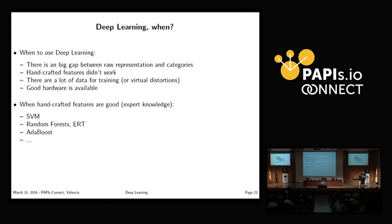My suggestion on when to use deep learning: if you have a problem where there is a big gap between your raw representation and the target you want to predict, it's a good idea to let the neural network learn how to bridge that gap. On the other hand, an expert might guide you to select good handcrafted features using other techniques. But if those handcrafted features are losing important hidden information, it's better to let the network learn the full representation. Of course, it's a good idea to have good hardware and a lot of data — or at least be able to generate more data.